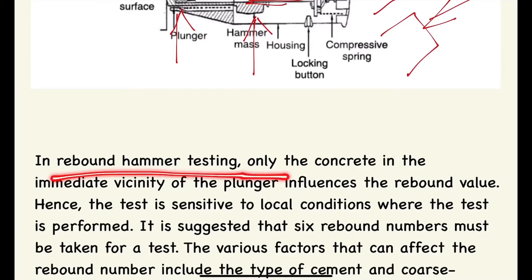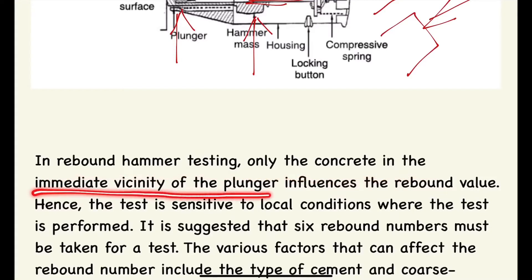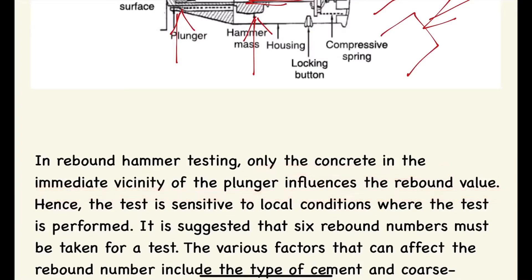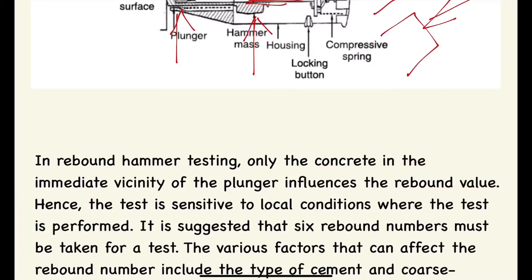In rebound hammer testing, only the concrete in the immediate vicinity of the plunger influences the rebound value. Hence, the test is very sensitive to the local condition where the test is performed — local conditions generally meaning environmental conditions present on the site or durability issues present on the site.